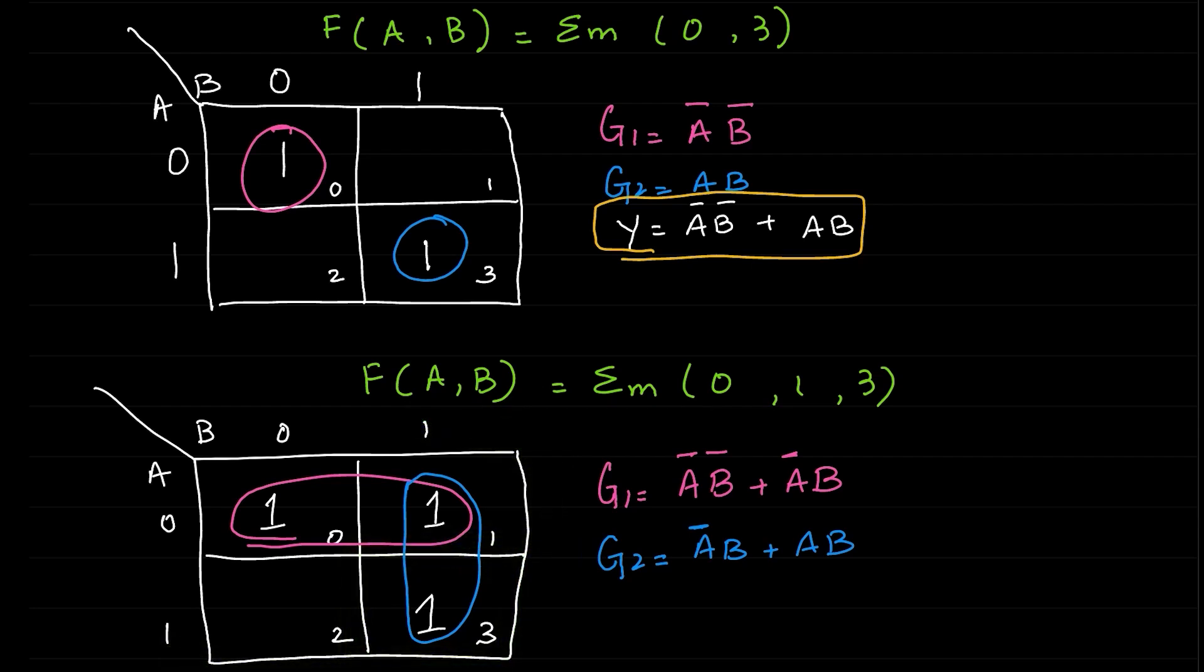Now next step is we will cancel out uncommon terms. B̅ and B, A̅ is constant in both the terms. And here A̅ is changing and B is constant. Finally we will combine both to have output, so A̅ + B is the output of the given two variable function.